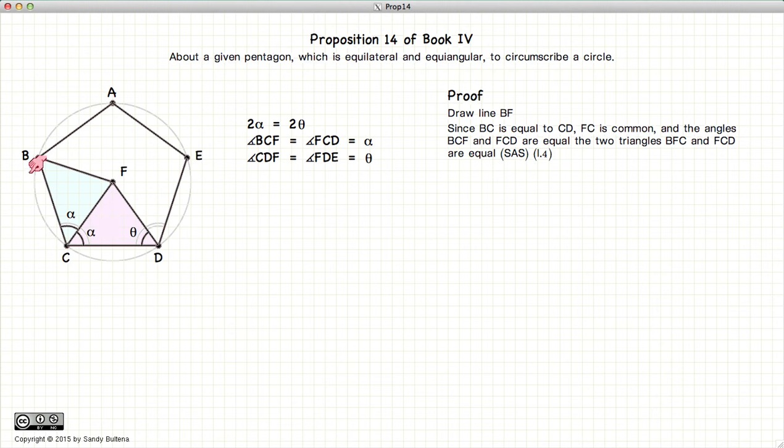Now bc is equal to cd, fc is common and these two angles are equal because cf bisects the larger angle. So we have side, angle, side. So these two triangles are equal in all respects which means this angle right here is also equal to that angle which is theta.